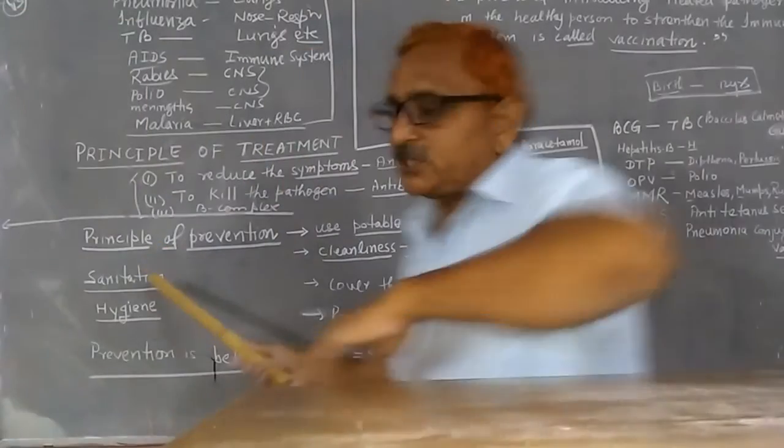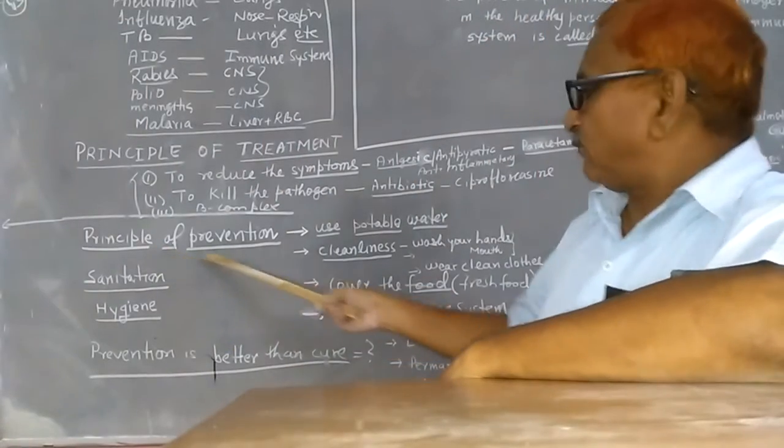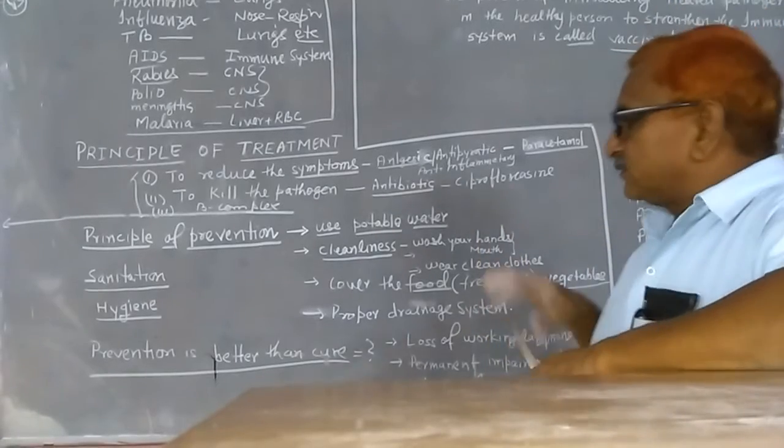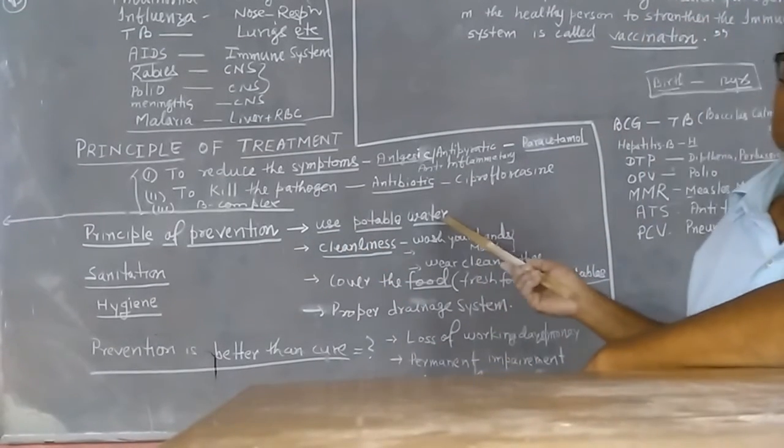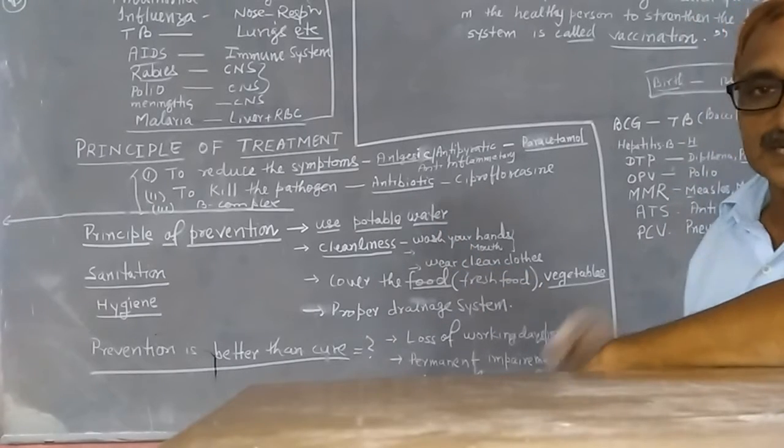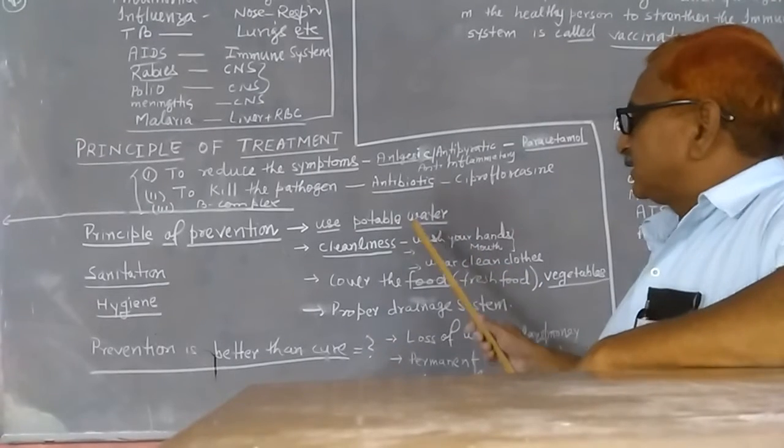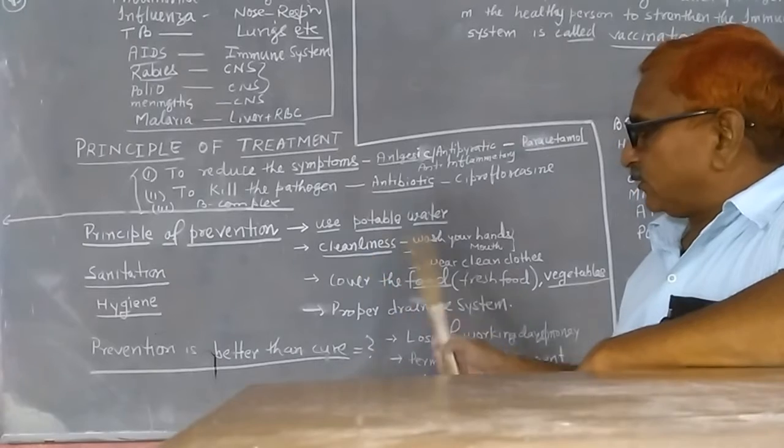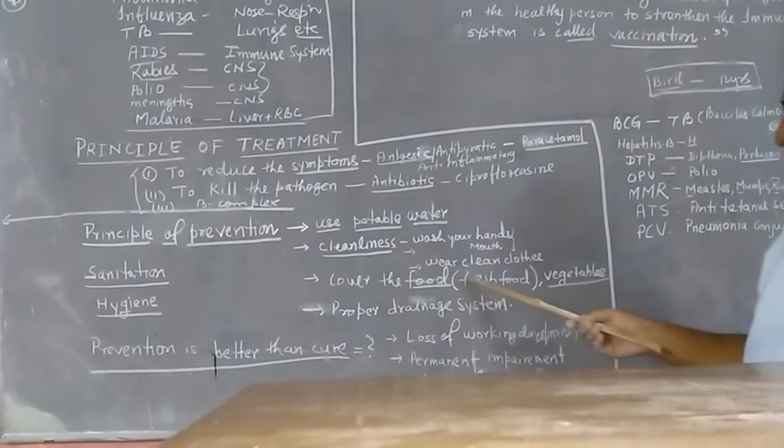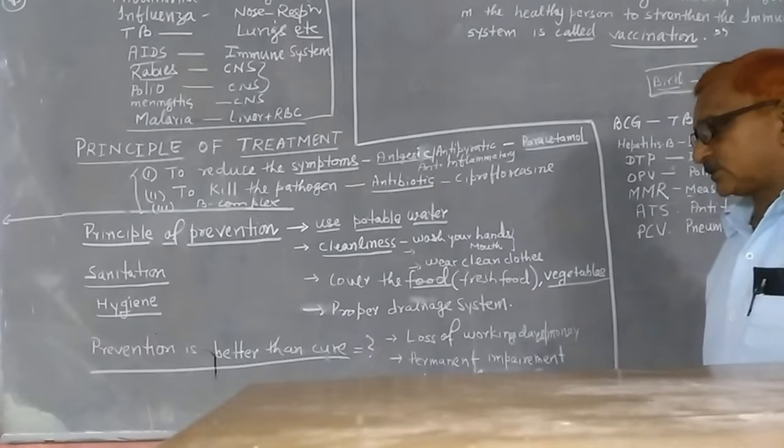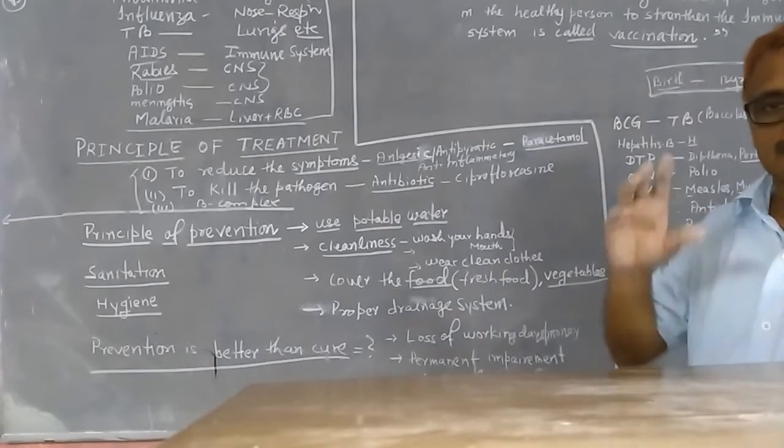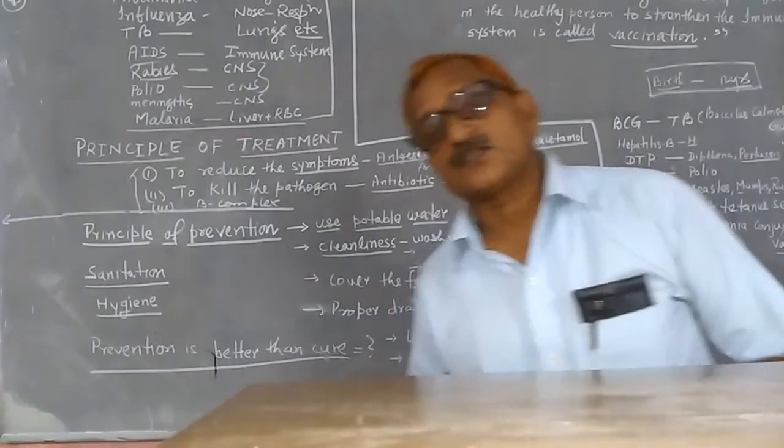Here, try to understand the principle of prevention - how can we stop disease? Always use potable water, safe water. If you feel there is an unsafe problem, then boil the water before use. For cleanliness, wash your hands and mouth properly, cover the food, wear clean clothes. A proper drainage system should be there. Wash the vegetables and eatables properly.